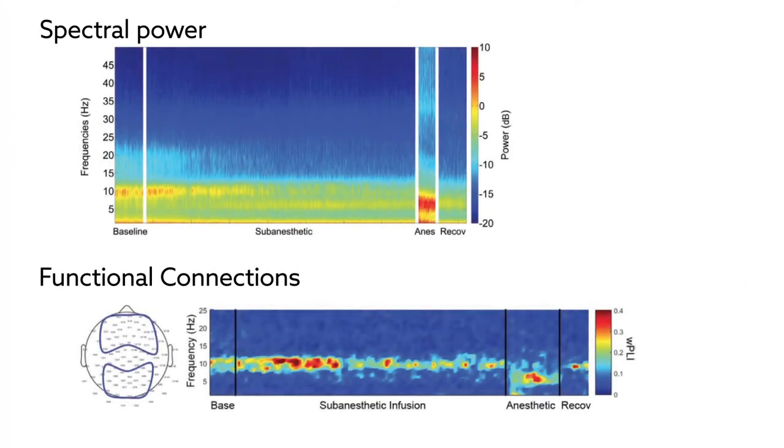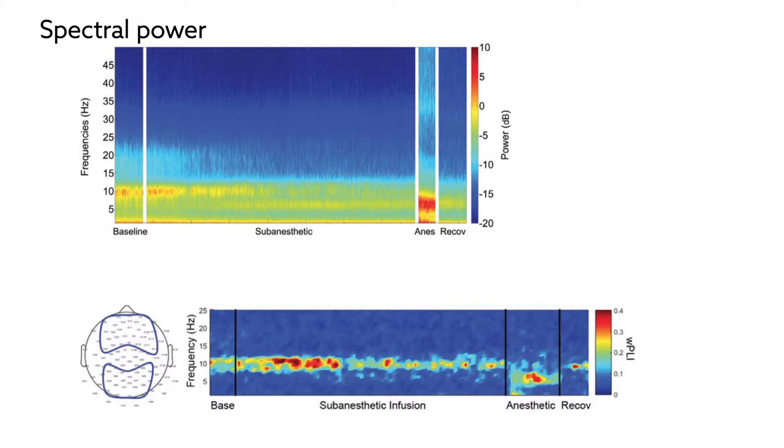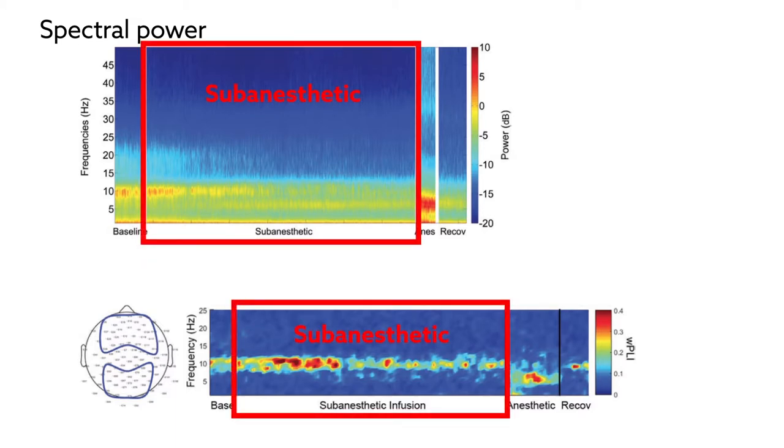They found the effects of ketamine to be highly dose-dependent. Clear differences in spectral power and functional connections across the brain were observed between the two dosing schemes.